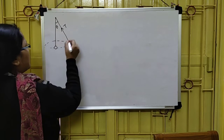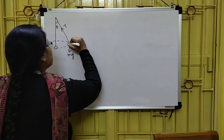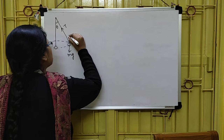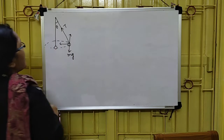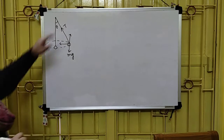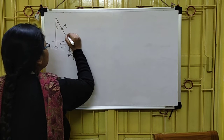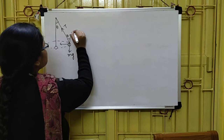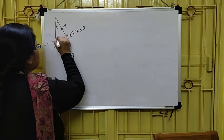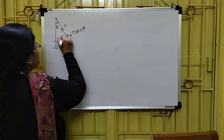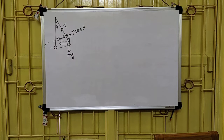If I resolve this tension force in two directions: since this angle is theta, one component will be T cos theta — that is along the vertical direction — and the other component will be T sin theta, acting horizontally towards the centre of the circular path.